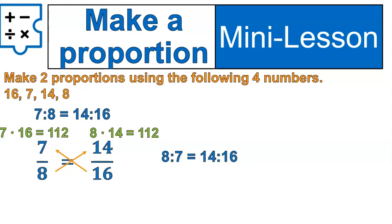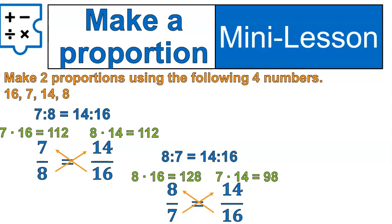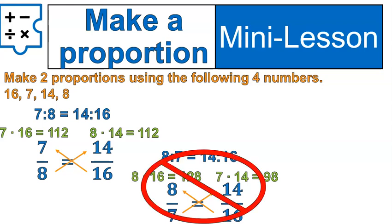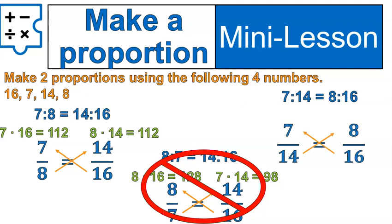Now what if I said 8 to 7 equals 14 to 16? Does the order of those numbers matter? Well, if we set this one up as a fraction, 8 over 7 and 14 over 16, we use cross multiplying and we'll find it very much does matter. 8 times 16 is 128, 7 times 14 is 98. So this is not a proportion. However, if we try a different one, 7 to 14, 8 to 16, we'll find that we have calculated and found another proportion. So that's nice.